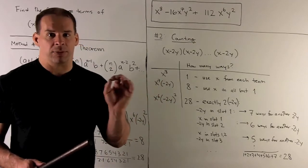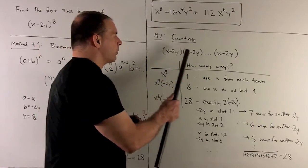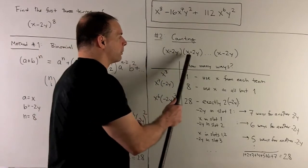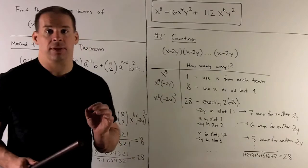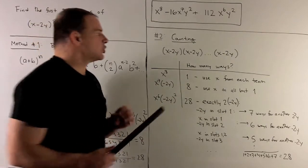Now, let's think about x^8. What are the choices I would make of x or -2y from each set of parentheses to get x^8? Well, I'd have to choose all x.